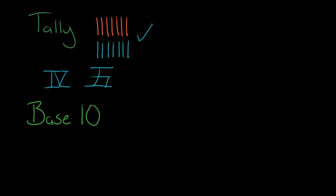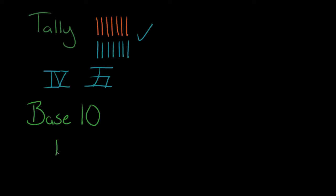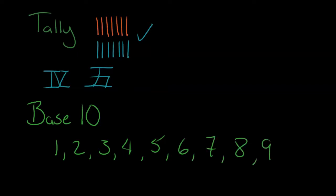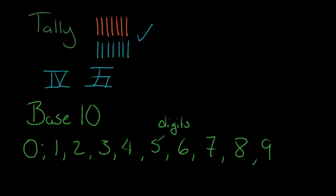Base 10 is what we use — also called the decimal system. Some counting systems are base 10, some are base 60, some are base 2, and we're going to talk about those differences soon. Base 10 just means we're counting in groups of 10. We have 10 fingers, so it was natural for us to count in base 10. In our system we start at one, two, three, four, five, six, seven, eight, nine. Zero actually came a while later, and I'm going to add it here as a placeholder.